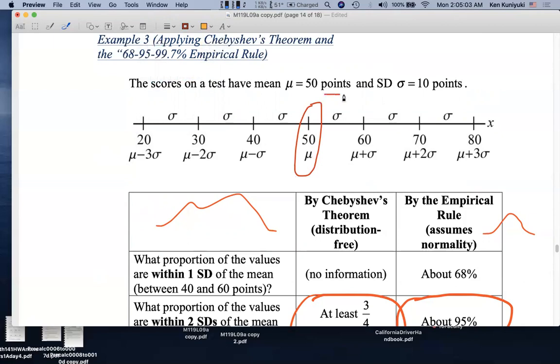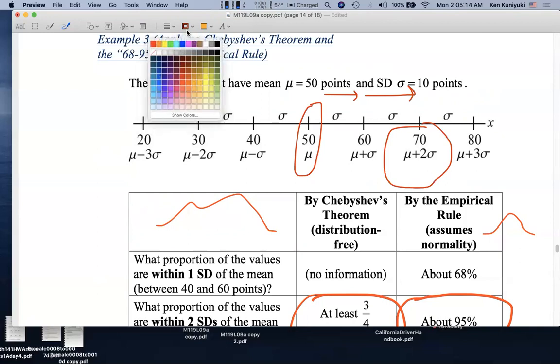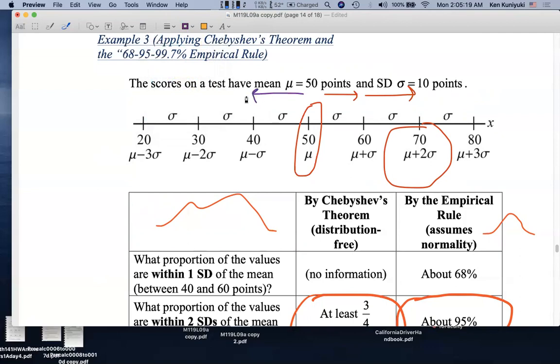If we walk two standard deviations to the right, we're walking 10 plus 10, or 20 points to the right, we get 70 points, or mu plus 2sigma. If we walk two standard deviations to the left, 10 points below, and then another 10 points below, well, 20 points below 50 points, the mean, is given by 30 points, mu minus 2sigma.